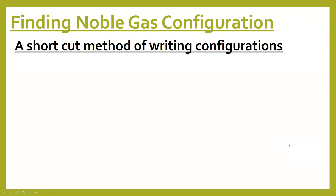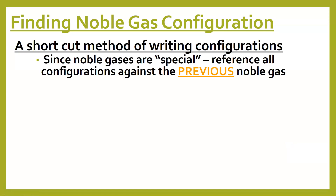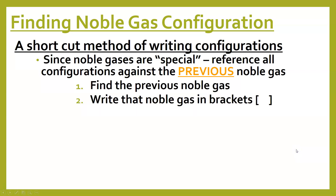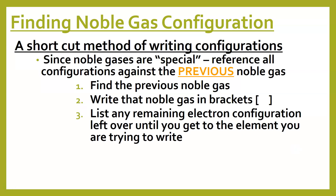Writing a noble gas configuration is a shortcut. We use the fact that noble gases are special and extra stable, and everything wants to look like a noble gas. We're going to shrink the first part of the configuration down to match the closest noble gas, put it in brackets with just the symbol, and then write anything that comes after that noble gas like a normal configuration. The idea is to take the whole front half of our configuration and shrink it to a noble gas inside brackets.